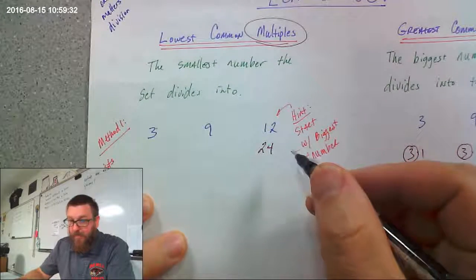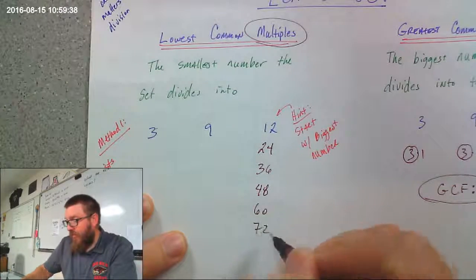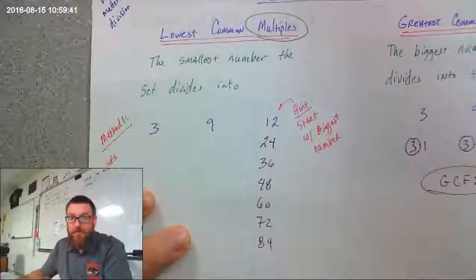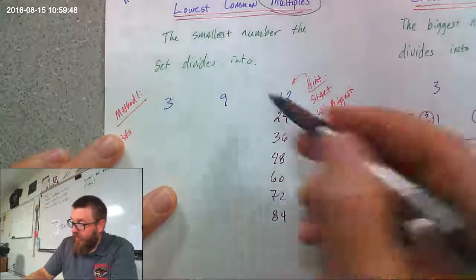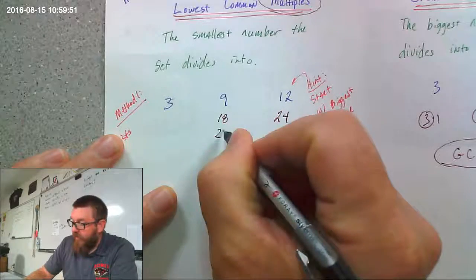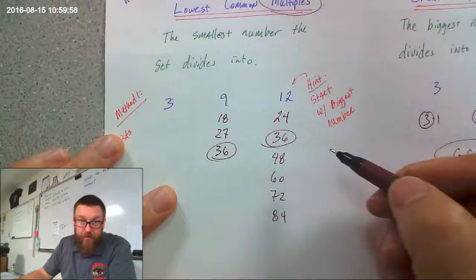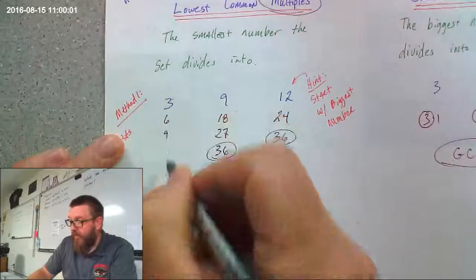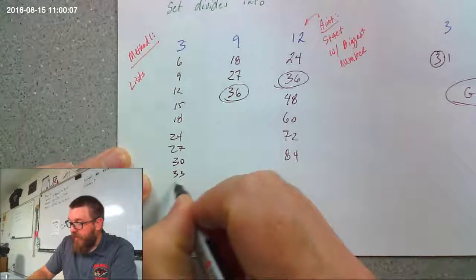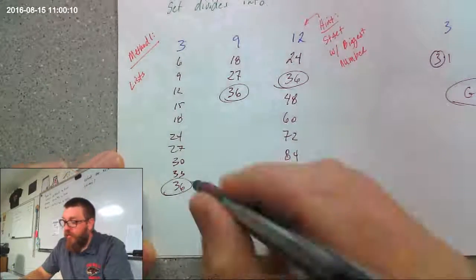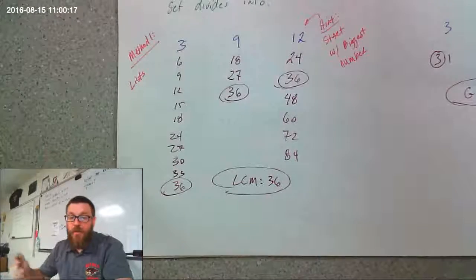Sometimes the easiest way is to start with the biggest number and list its multiples: 36, 48, 60, 72, 84. Now I make a list of the multiples of 9 and look to see if one of those exists over here: 9, 18, 27, 36 — right there. Now if 3 goes into 36, we're good. And it does: 3, 6, 9, 12, 15, 18, 24, 27, 30, 33, 36. So 36 is the smallest number that all three of these numbers go into. The lowest common multiple is 36.